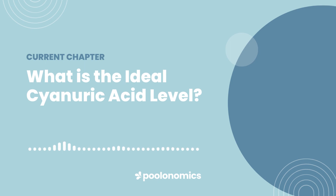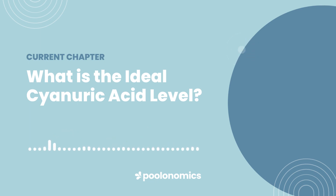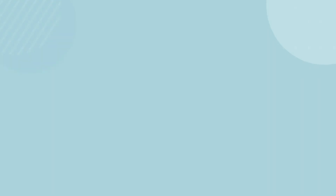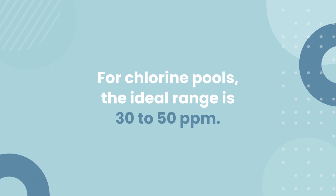What is the ideal cyanuric acid level? The ideal level is where enough of your chlorine has bonded with cyanuric acid to prevent it from breaking down, but not so much that it leaves your water without enough effective sanitiser. For chlorine pools, this range is 30 to 50 parts per million, depending on the level of sun exposure.